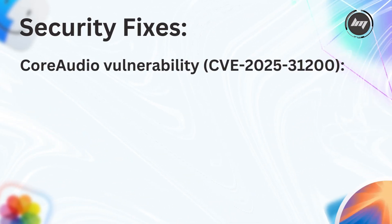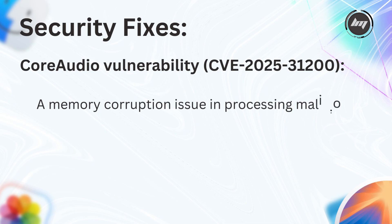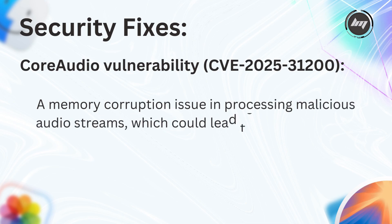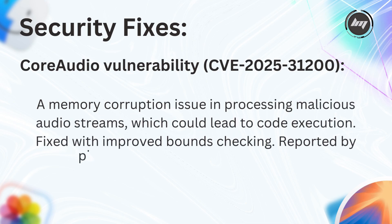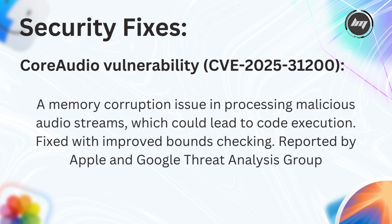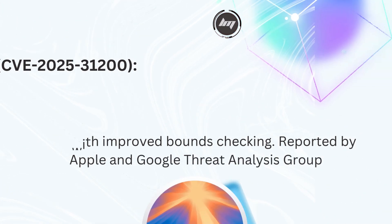The first is the Core Audio vulnerability, CVE-2025-31200 — a memory corruption issue in processing malicious audio streams, which could lead to code execution. This was fixed with improved bounds checking, and was reported by Apple and the Google Threat Analysis Group.